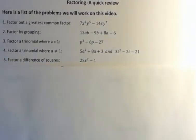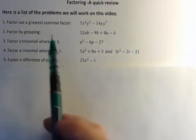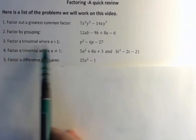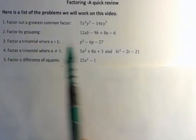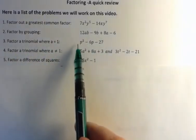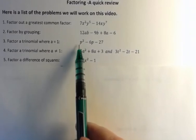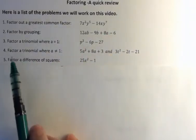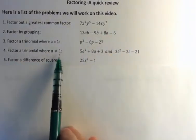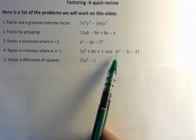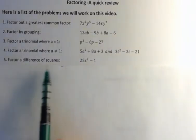Here's the list of problems that I'm going to go over in this video: factoring out a common factor, factor by grouping, a trinomial where a is equal to 1 (a refers to the coefficient in front of that lead term), factor a trinomial where a does not equal 1, and factor a difference of squares.